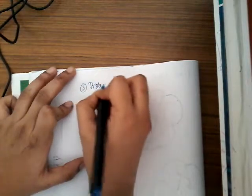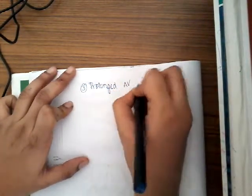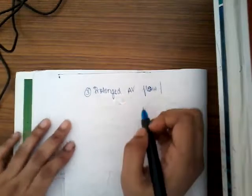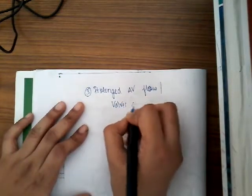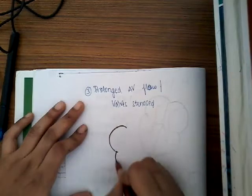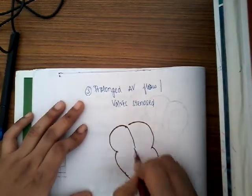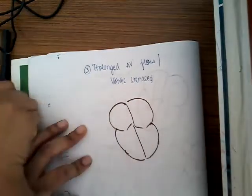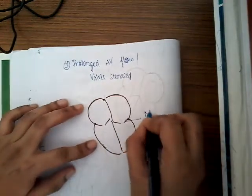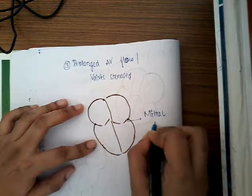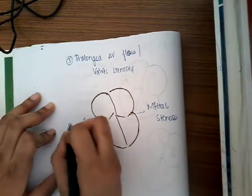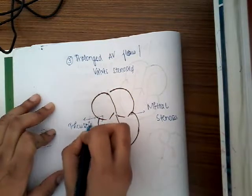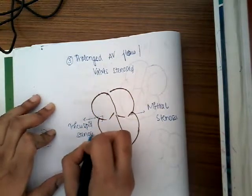The third cause of loud S1 is prolonged atrioventricular flow, which occurs when the valves are stenosed. In mitral stenosis and tricuspid stenosis, the ventricle contracts strongly to close these stenosed valves, producing loud S1. However, if these stenosed valves are calcified, there will be soft S1 — that is important to remember.